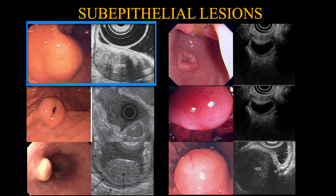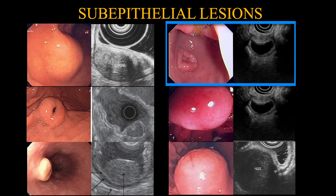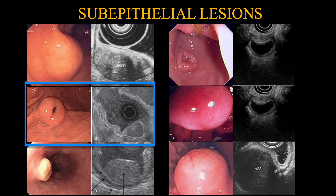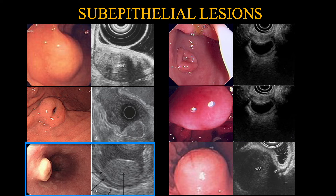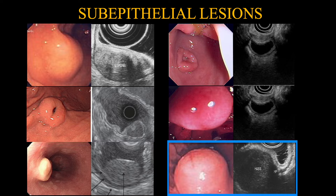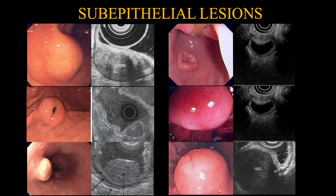Starting from the top left, we have a lipoma, followed by pancreatic rest to the right, then carcinoid tumour, a gastric cyst, a granulosa tumour, followed by a chest lesion. It would be impossible to differentiate them without the aid of endoscopic ultrasound.